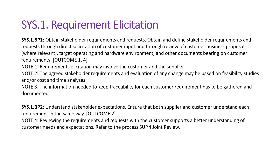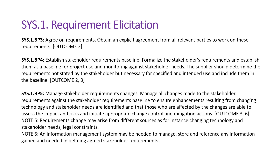BP2 talks about understanding stakeholder expectations — ensure that both supplier and customer understand each requirement in the same way. Both parties should be in sync so that if you understand a requirement in one way, your customer also understands the same requirement from the same perspective. BP3 talks about agreeing on requirements — obtain explicit agreement from all relevant parties to work on these requirements, meaning the requirements need to be authorized and approved.